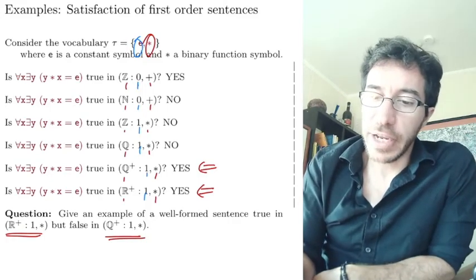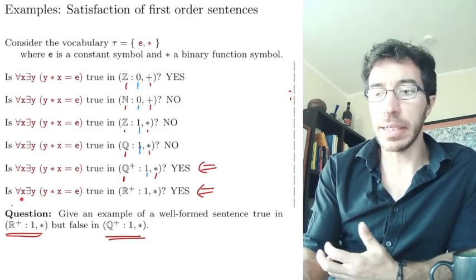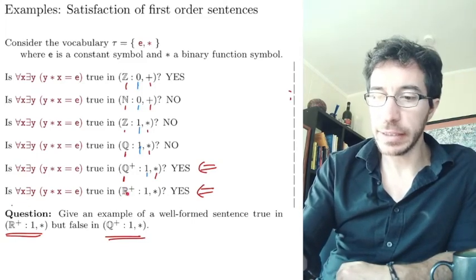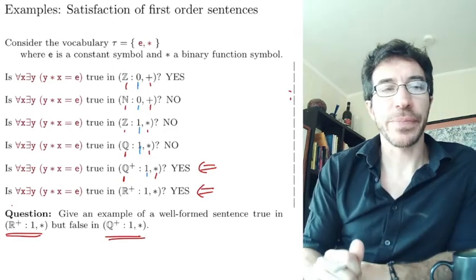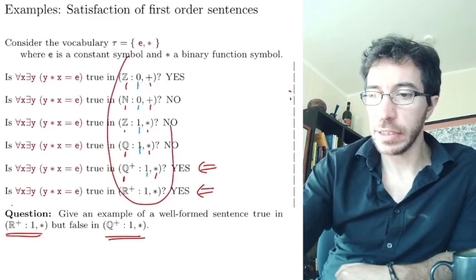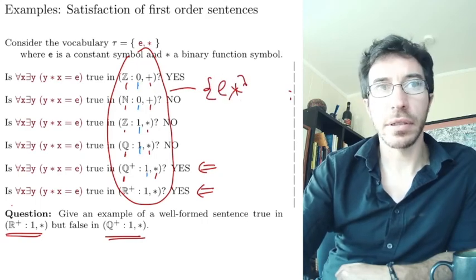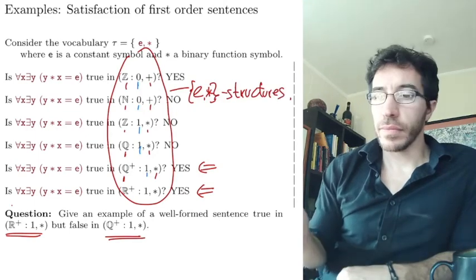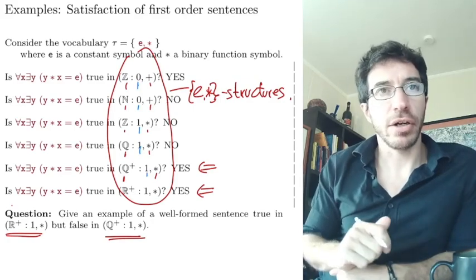So when we say for every x there exists a y such that blah blah blah, we mean we are taking these x and the y's from the domain. So from R in this case, from Q in this case. So the domain tells us where to consider the elements when we talk about every and there exists. All right, so we got that these guys up here, all of these guys here are τ structures. These are e star structures.